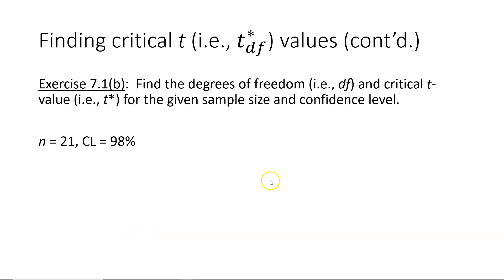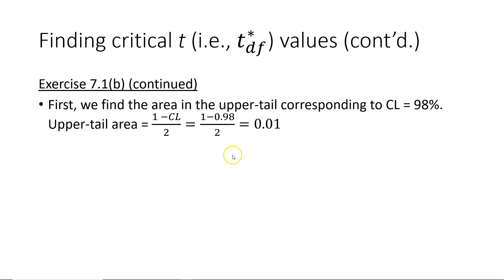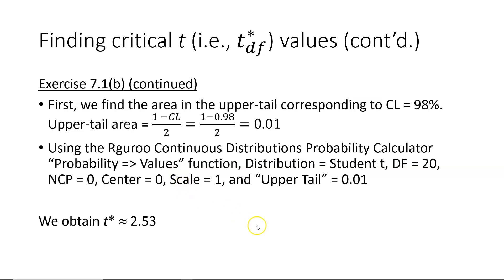Our final example is drawn from exercise 7.1b of the textbook. Here I'm asked to find the degrees of freedom and critical t value for a confidence level of 98 percent and a sample size of 21, so the degrees of freedom is 20 — one less than the sample size. I'm not going to demonstrate the guru again, but I'll show the paper work for finding the critical t value, which is 2.53 in this case. I strongly encourage you to work through our guru and confirm you get the same value.